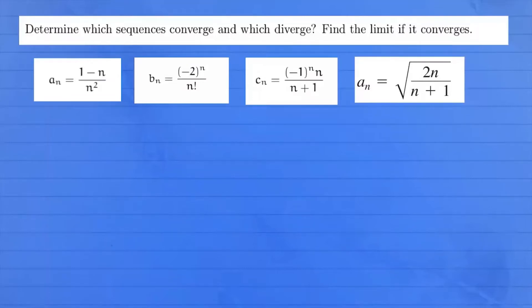Hi everyone! Let's talk about sequences. Sequences are just a list of numbers in a given order. We want to know if a sequence converges or diverges. Converge means it settles to a finite value — not infinity or negative infinity. If the limit doesn't exist, or those cases happen, then we say the sequence diverges.